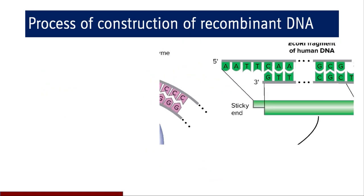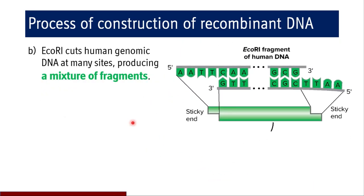In the next step, the ECO-R1 enzyme cuts the human genomic DNA at many sites, because the sequence AATT is the specific sequence for action of ECO-R1. If this sequence is present in human DNA, it is going to cut the DNA. ECO-R1 cuts the human genomic DNA at many sites because it is a huge DNA molecule and may have the AATT sequence at many sites, producing a mixture of fragments with sticky ends. Now we have two sets of fragments — one from the plasmid and one from the human genomic DNA.